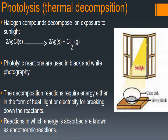Another example of thermal decomposition is photolysis. Halogen compounds decompose on exposure to sunlight. For example, silver chloride on decomposition gives silver and chlorine. Photolytic reactions are used in black and white photography. Decomposition reactions require energy either in the form of heat, light, or electricity for breaking down the reactants. Reactions in which energy is absorbed are known as endothermic reactions, which we have already studied.